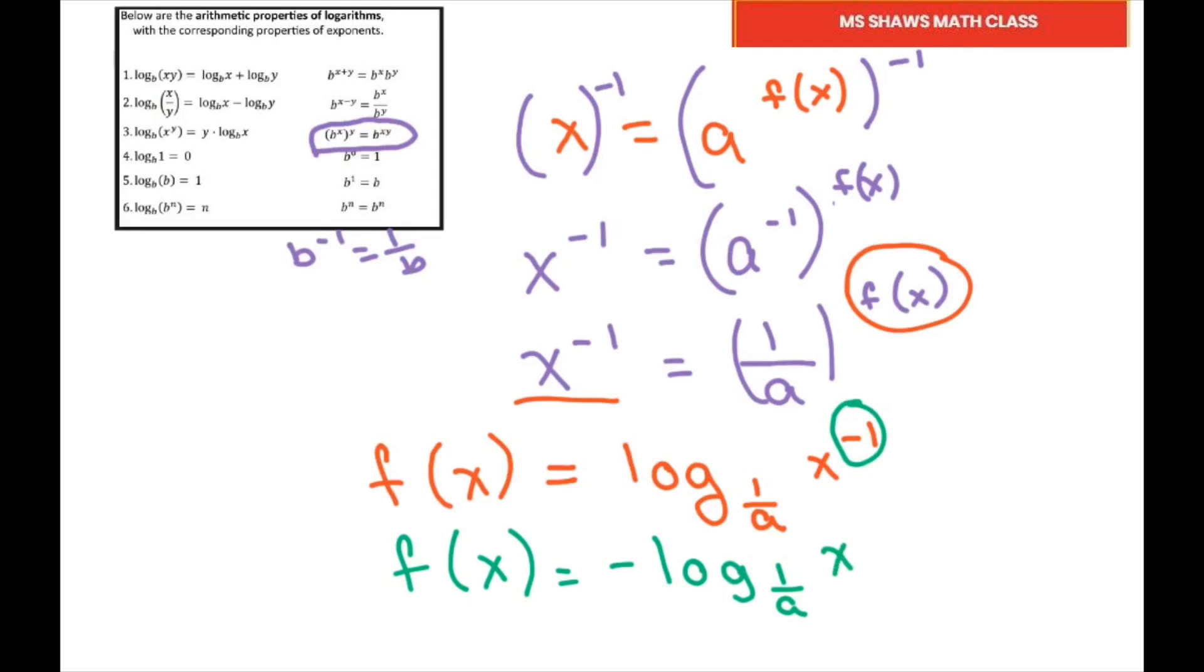So now all we have to do is multiply everything through by negative, negative 1, and that's going to give us negative F of X equals log base 1, 1 divided by A to the X.